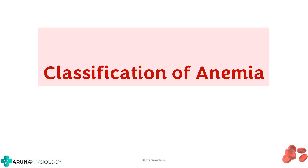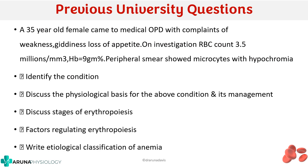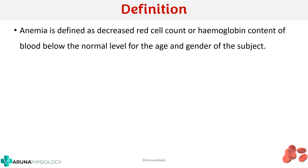In this video we're going to see about classification of anemia. This question can be asked as part of a structured essay question or even as a short essay question. Anemia is defined as a decreased red blood cell count or hemoglobin content of blood below the normal level for the age and gender of the subject.